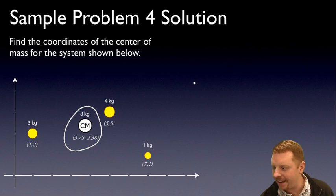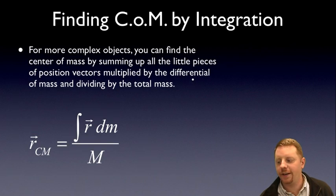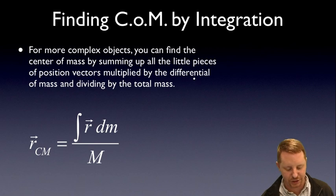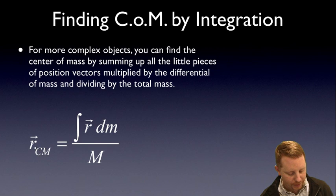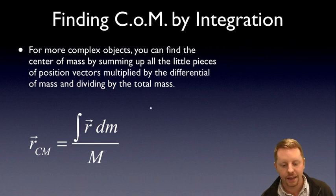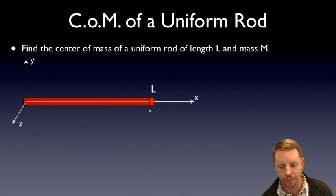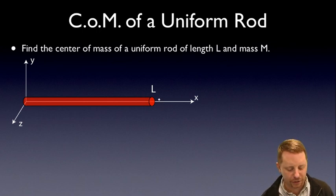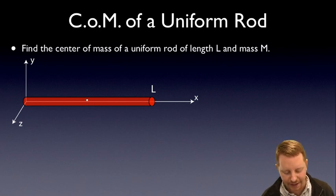For more complex objects, you can find the center of mass by summing up all the little pieces of position vectors multiplied by the differential of mass and dividing by the total mass. The formula is: position vector to the center of mass equals the integral of r dm over the total mass M. Let's see how this plays out as we try to find the center of mass of a uniform rod of length L and total mass M. By inspection, if it's uniform density, of course we'll have the center of mass at L over 2, half the distance of the rod — but let's prove that.